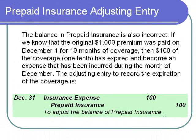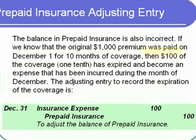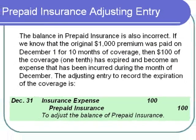Likewise, the balance in prepaid insurance is also incorrect. The $1,000 balance represents the cost of the premium paid earlier in the year. If the $1,000 premium was paid on December 1st and the coverage period is 10 months, then by the end of December, one month's worth of coverage will have expired. One month out of 10 is one-tenth, and one-tenth of $1,000 is $100. The adjusting entry is to credit prepaid insurance for $100 and debit insurance expense for $100.